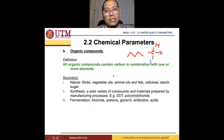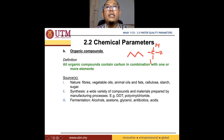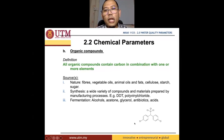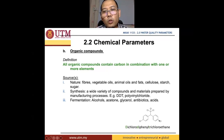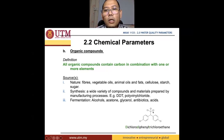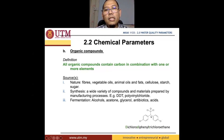Sometimes organic compounds can be synthesized, like DDT. DDT is a compound that people normally use as a pesticide or insecticide. The chemical formula for DDT is shown here. This compound is called dichloro-diphenyl-trichloroethane. 'Dichloro' means two chlorines, 'diphenyl' means two aromatic rings, and 'trichloro' means three chlorines.